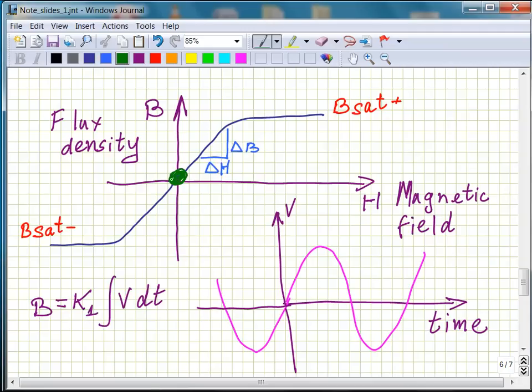Now, suppose you connect the transformer at zero voltage. Now, as you go up on the voltage, volt seconds are accumulated, and one is moving on this BH curve this way.